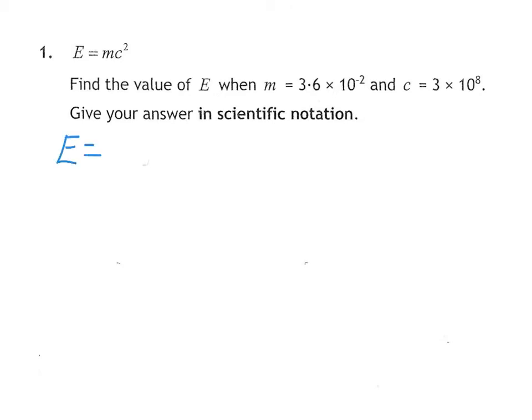E equals M replaced with 3.6 times 10 to the negative 2, and C replaced with 3 times 10 to the power of 8, and I have to square that. Option 1 is you can go straight to your calculator, option 2 is you can write these numbers out in full.